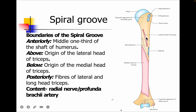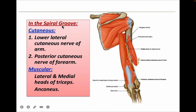We should also know about the spiral groove. Above the spiral groove is the lateral head of the triceps, and below is the medial head. The boundaries of the spiral groove: the humerus bone forms the floor — the middle one-third of the shaft. Anteriorly above is the lateral head, below is the medial head, and posteriorly there are fibers connecting the lateral, long, and medial heads. The contents of the spiral groove are the radial nerve and the profunda brachii artery. Branches from the radial nerve within the groove include: the lower lateral cutaneous nerve of the arm, the posterior cutaneous nerve of the forearm, muscular branches to the lateral and medial heads of triceps, and the nerve to anconeus.